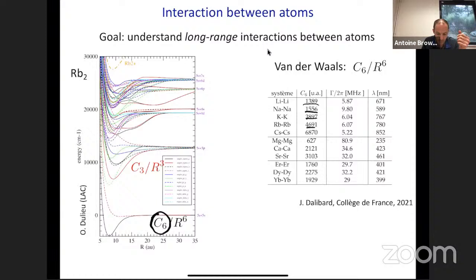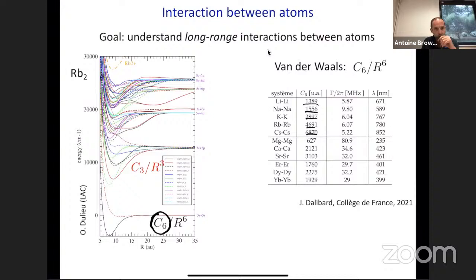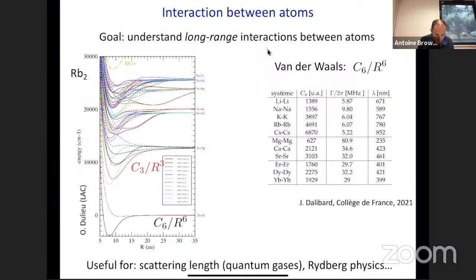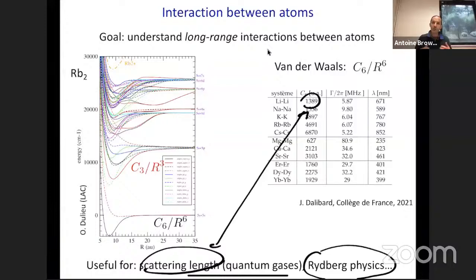Understanding this long-range interaction is key for calculating the scattering length that governs properties of Bose-Einstein condensates and fermions interacting in different spin states. We also need to understand C6 quantitatively to understand interactions between Rydberg atoms, which are at the heart of quantum simulation and quantum information processing with these atoms.